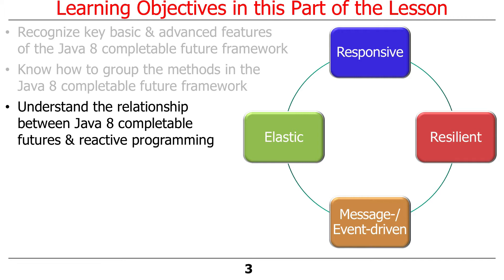The other thing we'll do in this section is talk about the relationship between Java 8 CompletableFutures and so-called reactive programming, which is a very popular paradigm for writing code these days. You'll learn a lot about that if you work with things like Kotlin, RxJava, or Clojure. Those are rightly touted as reactive programming languages, frameworks, and models — and Java 8 also supports features of that.